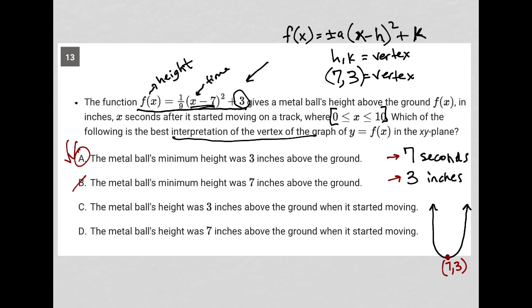I mean, kind of makes sense, but it doesn't make sense because when it started moving is where x equals zero, and if I put zero in here I don't get three at all. So that doesn't make any sense. And then choice D: the metal ball's height was seven inches above the ground when it started moving. So again, seven has to do with seconds, not inches. So D is gone. So choice A is the best answer here.